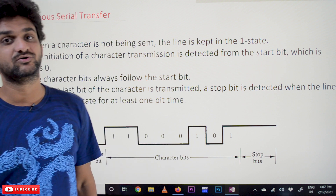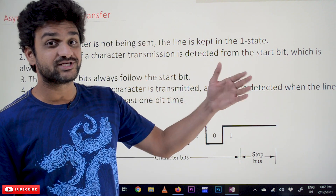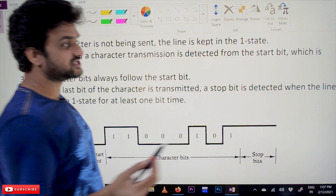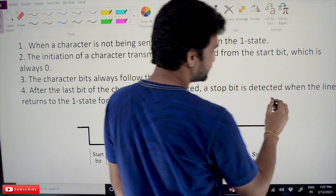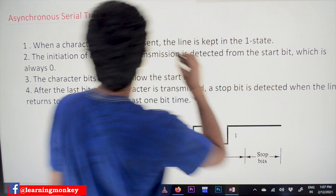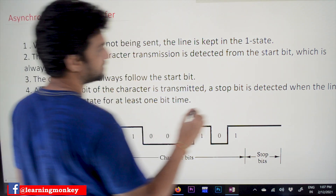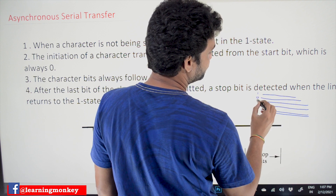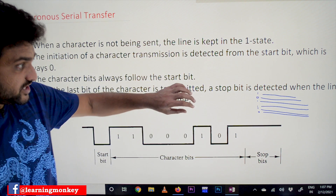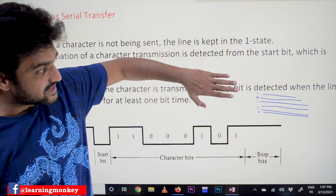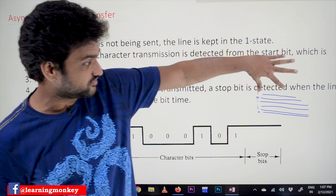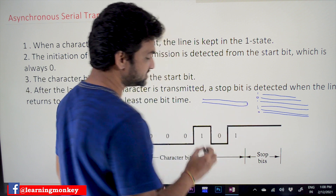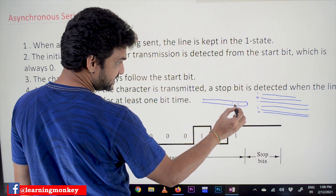The link for the playlist is provided in the description below. Now, what is asynchronous serial transfer? First, what is serial transfer? There are two kinds of transfers: serial transfer and parallel transfer. In parallel transfer, for example, if you want to transfer eight bits, each bit is transferred on one single line simultaneously, and the parallel transfer gets directly stored onto the register.